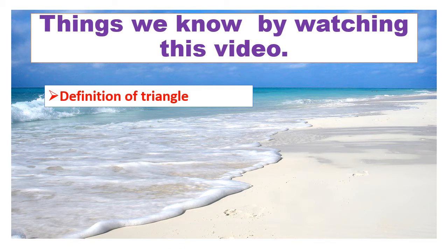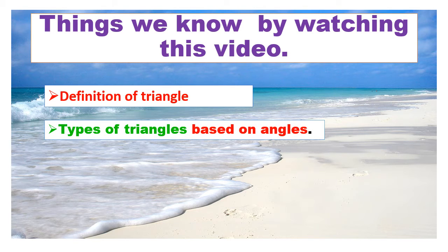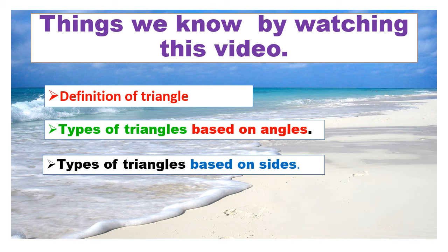One is the definition of triangle. Second one is the types of triangles based on angles. And last one is types of triangles based on sides.